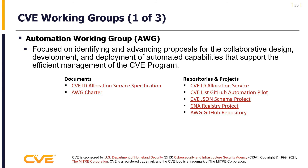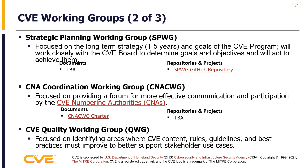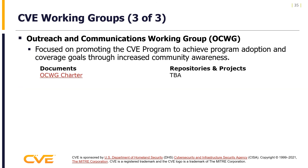The Automation Working Group is focused on identifying and advancing proposals for collaborative design, development, and deployment of automated capabilities supporting efficient CVE program management. The Strategic Planning Working Group focuses on long-term strategy and goals, working closely with the CVE board. The CNA Coordination Working Group provides a forum for effective communication and participation by CNAs. The CVE Entry Quality Working Group focuses on improving CVE content, rules, guidelines, and best practices. The Outreach and Communications Working Group promotes the CVE program to achieve adoption and coverage goals through increased community awareness.